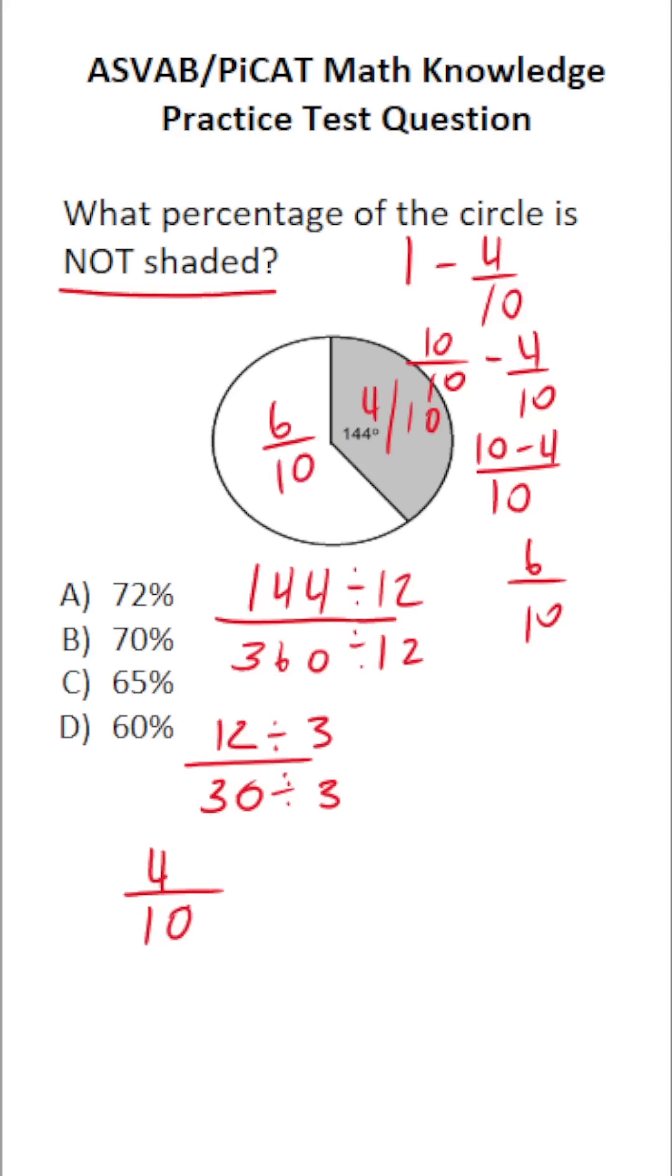So 6 tenths of this circle are not shaded. 6 over 10 or 6 tenths is the same thing as 60%. So 60%, answer D, of this circle is not shaded.